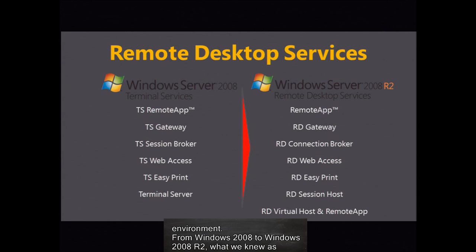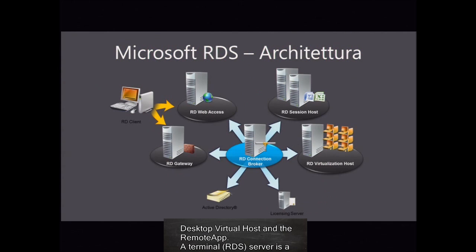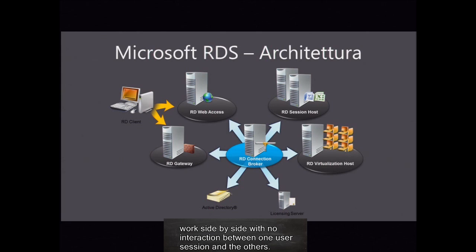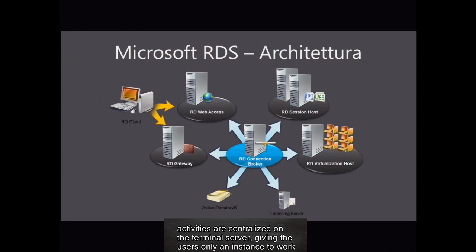From Windows 2008 to Windows 2008 R2, what we knew as terminal services has been transformed into Remote Desktop Services, and that involves also having quite a few new features. A whole new role is the Remote Desktop Virtual Host and the Remote App. A terminal RDS server is a single machine with all the required software installed that enables users to connect and work side-by-side with no interaction between one user's session and the others. Every single user will have his memory and disk space. We could say that we are deploying a central host server with a GUI. Patches, software updates, and all the software lifecycle activities are centralized on the terminal server, giving the users only an instance to work on.